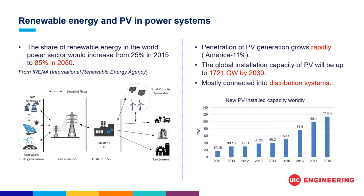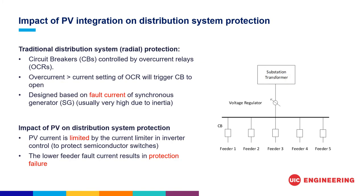Most of these PV generation units are integrated into distribution systems through inverters to form a grid-connected PV system. Although PV generation can effectively alleviate overloads and share the power supply, it can cause some undesired issues, especially protection problems.